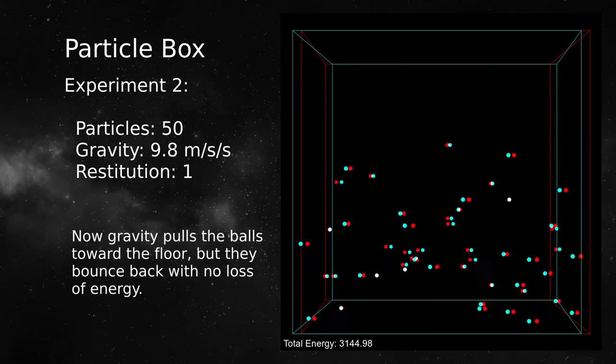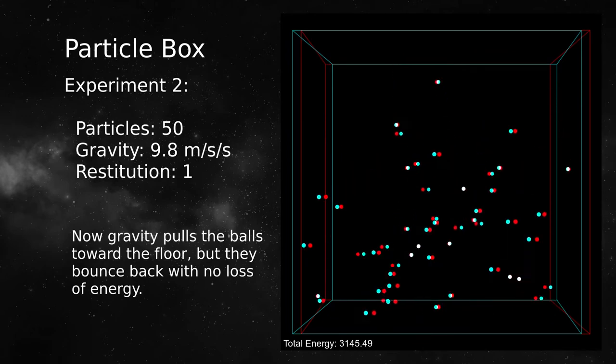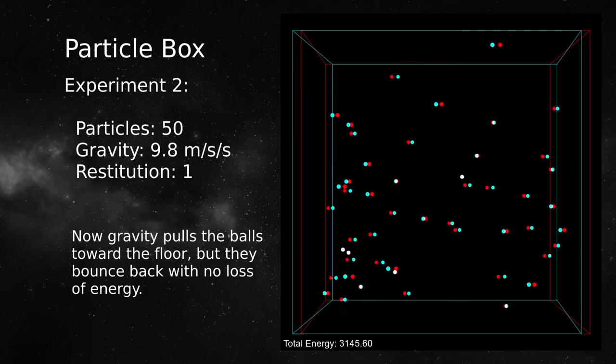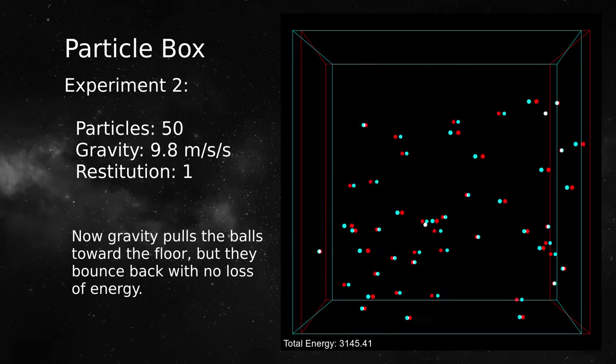Now the box has normal Earth gravity. The particles fall to the bottom and bounce. The restitution value is still 1, so the particles don't lose any energy when they bounce. Notice the energy level shown at the lower left. It should be nearly constant.